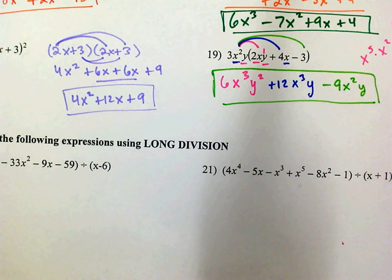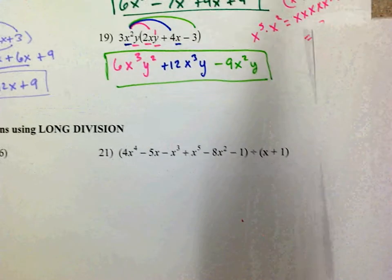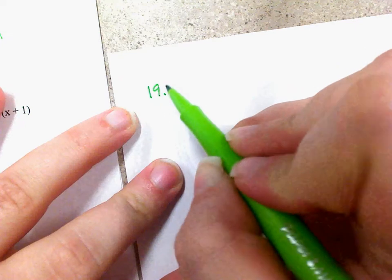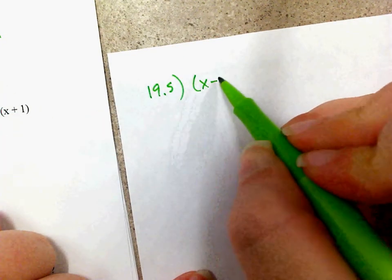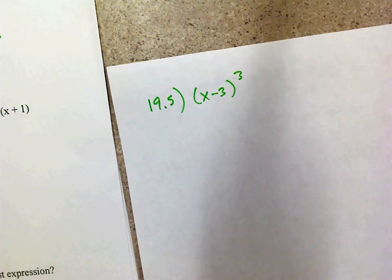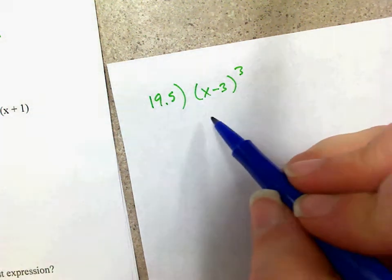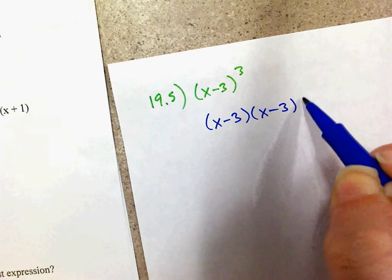I added a question for my class — here is 19.5. Question 19.5 is x minus 3 quantity cubed. To raise something to the third power means you're going to multiply it by itself three times. So I've got x minus 3 times x minus 3 times x minus 3.